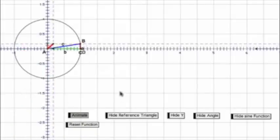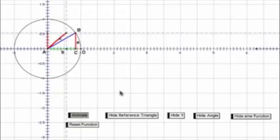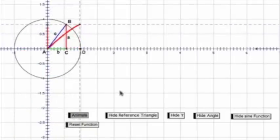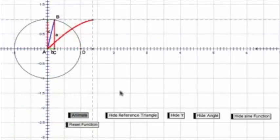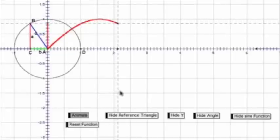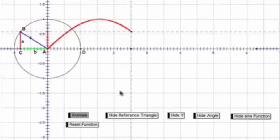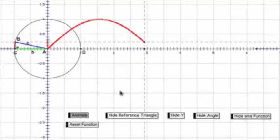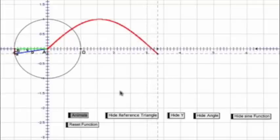We can successfully graph the function y equals sine x on the geometry sketch pad. Here we have the reference triangle, the red line indicating the height or amplitude of the y value, and the graph itself. This, in essence, is everything involved with the function y equals sine x.